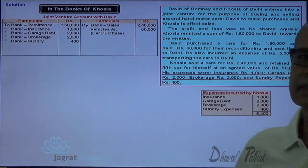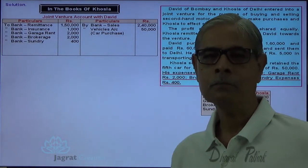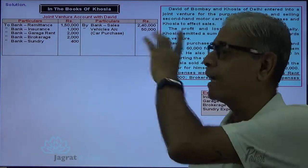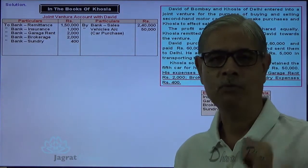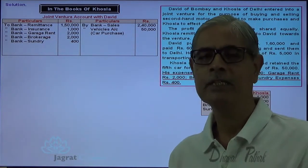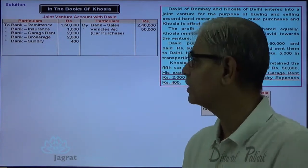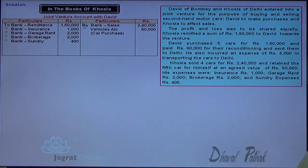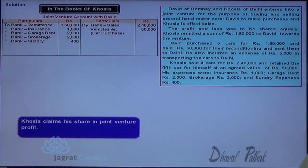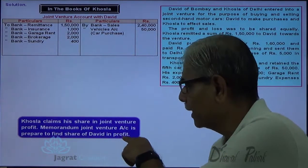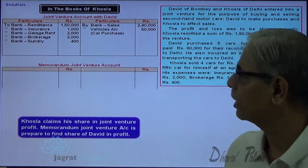All transactions are now over. Khosla wants his share in profit. To find out his share in profit, a memoranda joint venture account is prepared. This account will disclose the total profit, after which the share of each partner is worked out. Khosla claims his share in joint venture profit. The memoranda joint venture account is prepared to find out the share of both David and Khosla in profit.